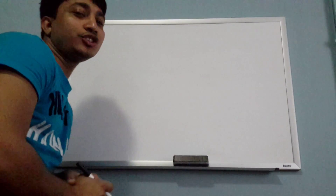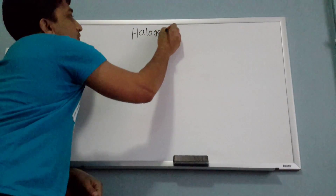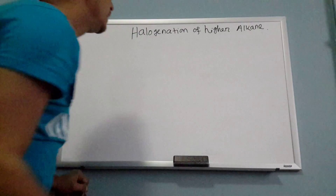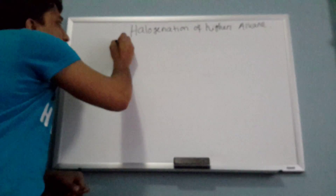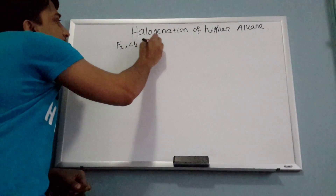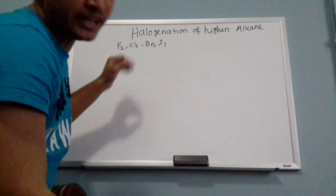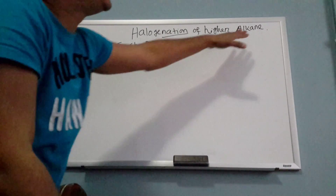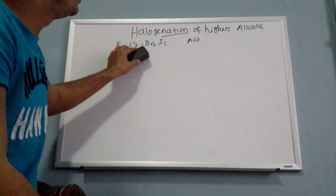Today my topic is halogenation of higher alkyne. What is halogenation? First, what is a halogen? Halogen can be fluorine, chlorine, bromine, or iodine. Halogenation — any time you see '-ation' — means you are going to add something to the alkane. You also have to show the mechanism.